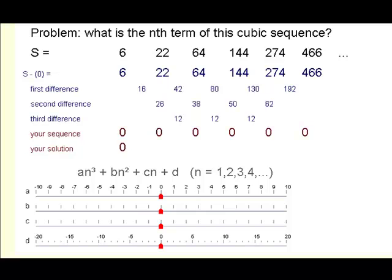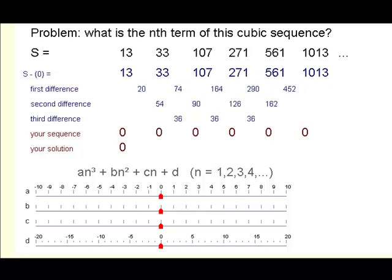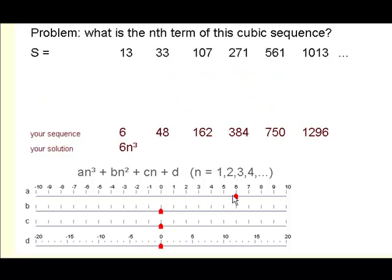Take a new problem. Let's take a slightly different value. Here we have a third difference of 36. We divide that by 6 to find the a value. So that's 6.